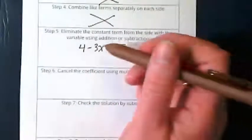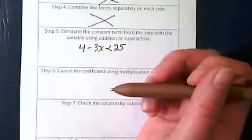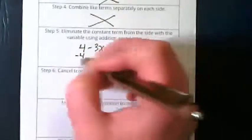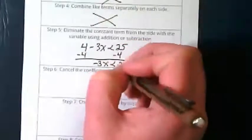This says step 2. Eliminate, meaning zero out. What gets zeroed out here? The 4. I get negative 3x is less than 21.